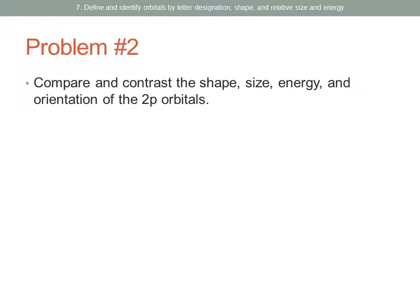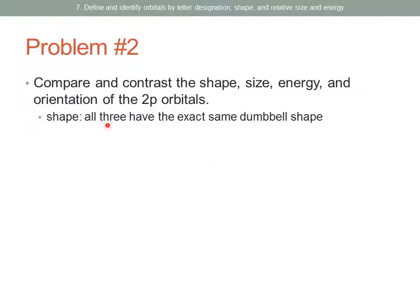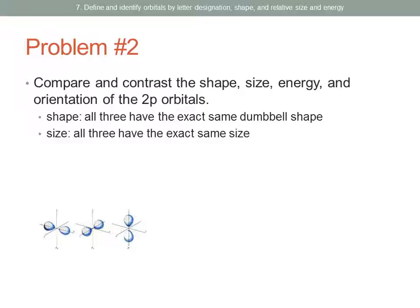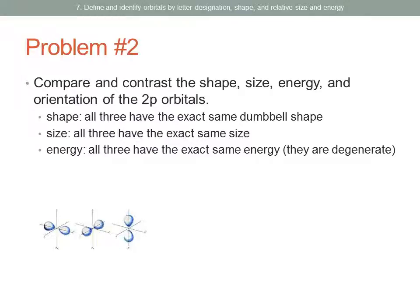Second question: we are asked to compare and contrast the shape, size, energy, and orientation of the 2P orbitals. All three of the 2P orbitals have the exact same dumbbell shape. Recall that P sublevels contain three orbitals. They all have the exact same size. All three of these orbitals would have the exact same energy — in other words, they are degenerate. The reason we know that is they're all in the same sublevel.